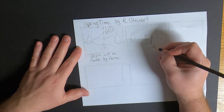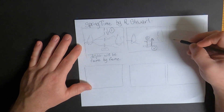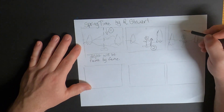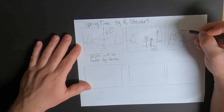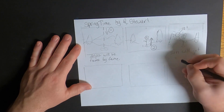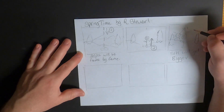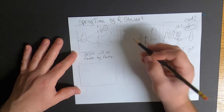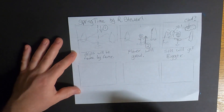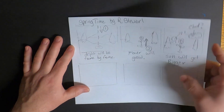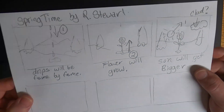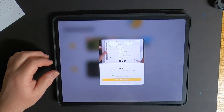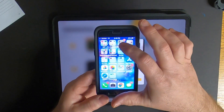For this particular project the criteria is to have three objects that move independently of each other. What I'm going to be doing here is creating an animation called Springtime, where there's going to be a winter scene — some raindrops are going to fall, hit the snow, and out of that snow will grow a beautiful little flower. I'm also going to have a sun in the back that moves across the sky and transforms, or gets larger.